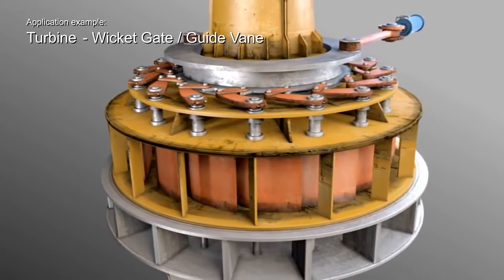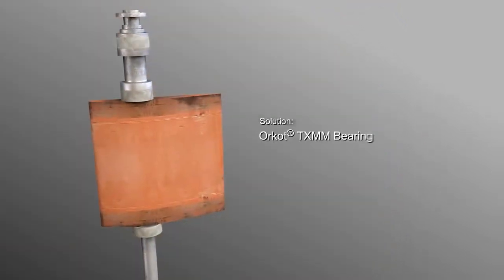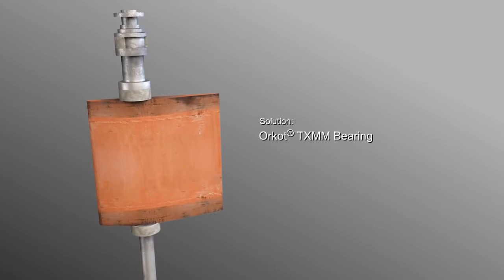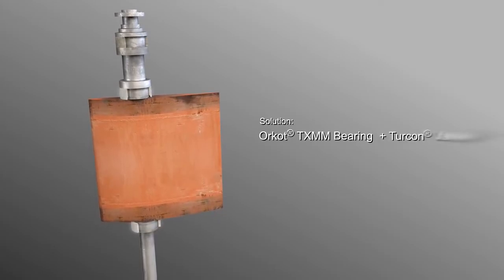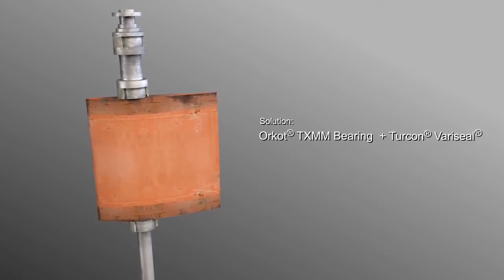For wicket gates and guide vanes, Trelleborg manufactures Orcott TXMM bearings on the intermediate and lower assembly, combined with a seal that prevents water from damaging the trunnion.